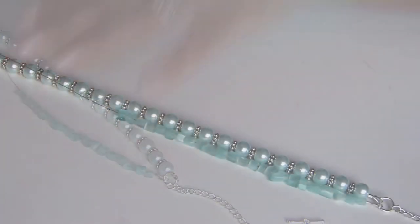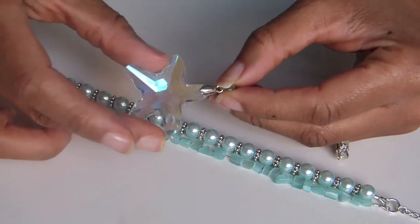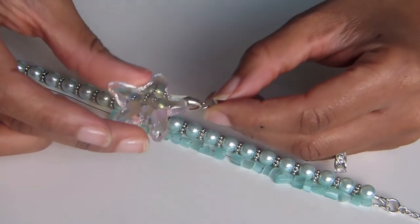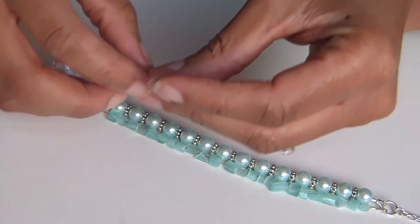You're going to do the same thing up until you get to the halfway point. This is the point where you're going to add your feature bead, which is that starfish, so it falls into the center of the sea glass strand.